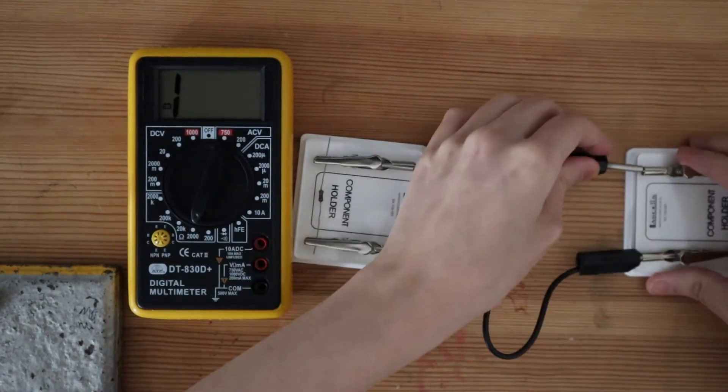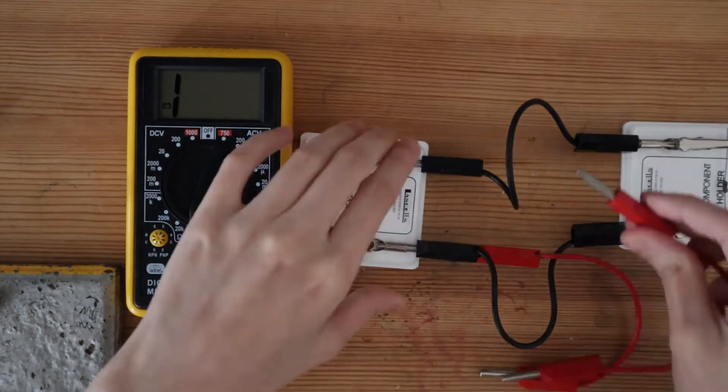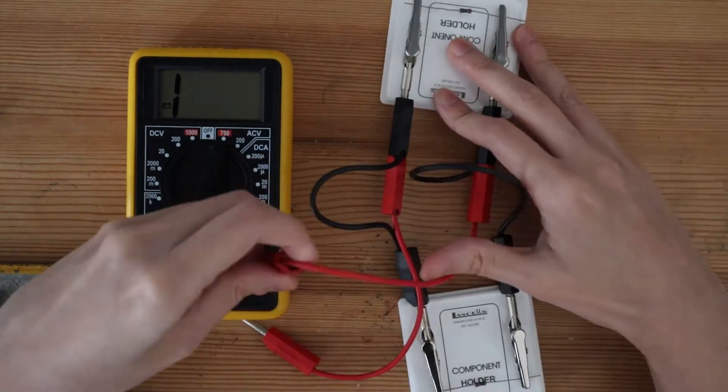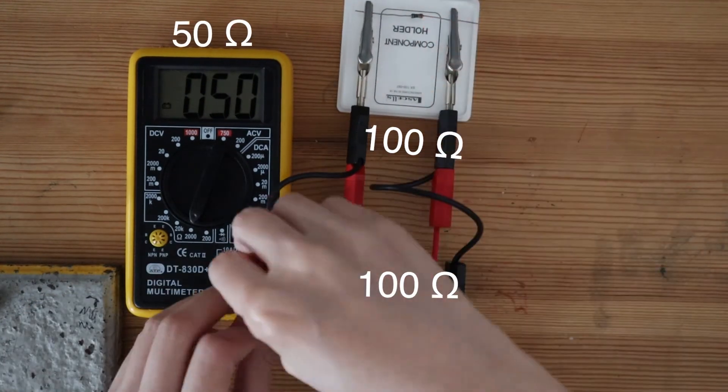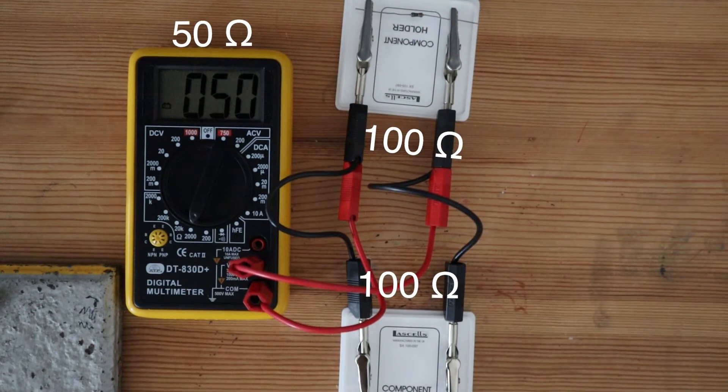When connected in parallel, their total resistance drops significantly. And that is because, by connecting the resistors in parallel, the circuit now has more branches for the currents to flow through.